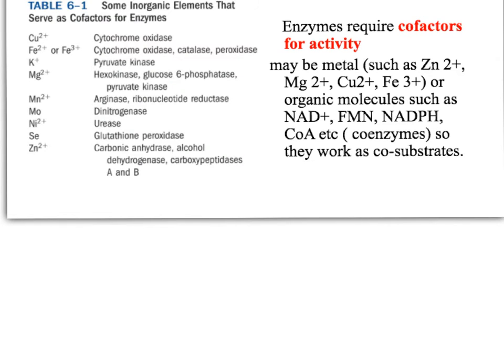Many active sites of enzymes have the presence of cofactors for activity. Cofactors can be divided into two groups. The cofactors can be a metal with a plus charge, such as magnesium 2+, zinc 2+, copper 2+, iron 2+, iron 3+, or a small organic molecule. If the cofactor is a small organic molecule, it is called a coenzyme.